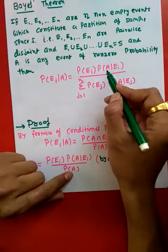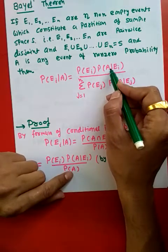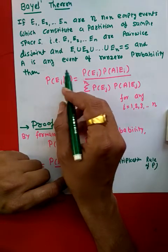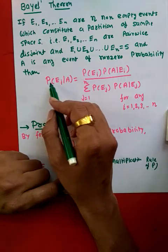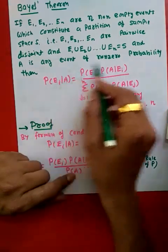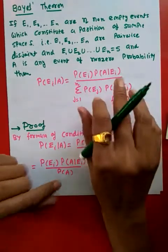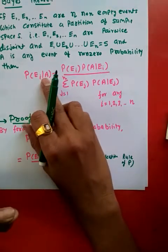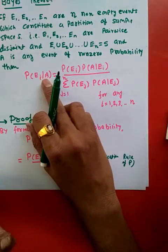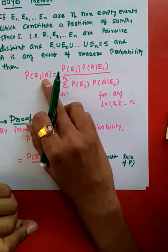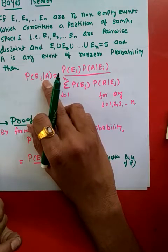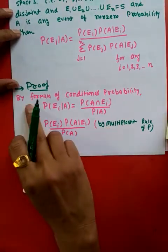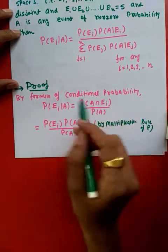It is very easy to find out P(A given E), but before Bayes' theorem it was difficult to find out P(E given A). By using this equation you can easily find out the probability of E given A. Let us do the proof first so that things will be clear.